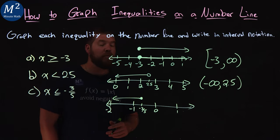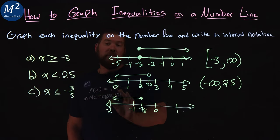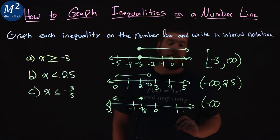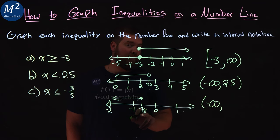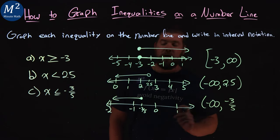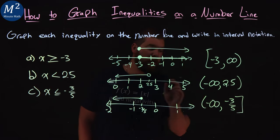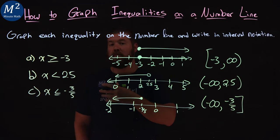So now that we have our graph, we have to write the interval notation. Now since all the x values are less than negative 3 fifths, that's going to be with negative infinity. And then we're going up to a negative 3 fifths value, the highest value that we can have. And since we can equal that, we put a bracket there. And so now we have our interval notation as well as a graph for each one of these problems.